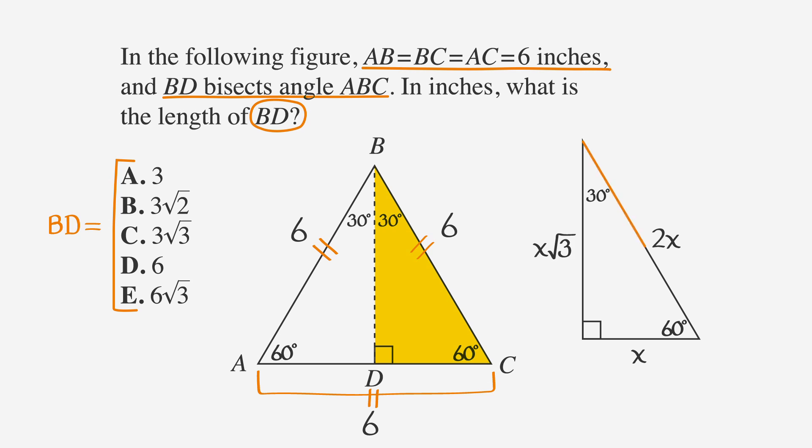Side BC is the hypotenuse of this 30-60-90 triangle, and the hypotenuse of a 30-60-90 triangle always equals 2x. In this case, 2x equals 6, which means x equals 3. That means the x times the square root of 3 side equals 3 times the square root of 3. So the length of BD equals 3 times the square root of 3. Looks like answer choice C is the correct answer.